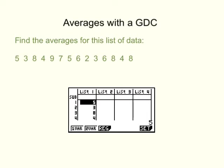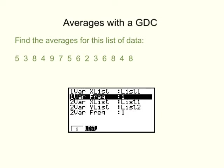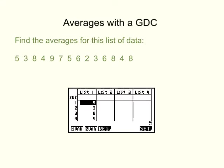We're going to do one variable analysis, but first we need to set it up correctly. So we click Set, which is F6, and that takes us to a menu where we can set our information. For one variable, the list must be list 1, and the frequency must be 1. If it says list 1 or list 2 there, you need to press F1 to get that 1. We then hit Enter and go back. Now that we've set it up correctly, we press F1 for one variable analysis.